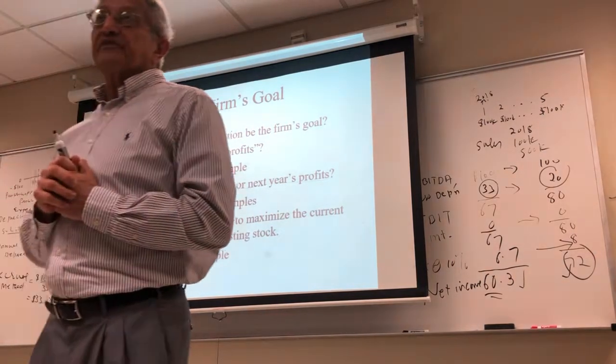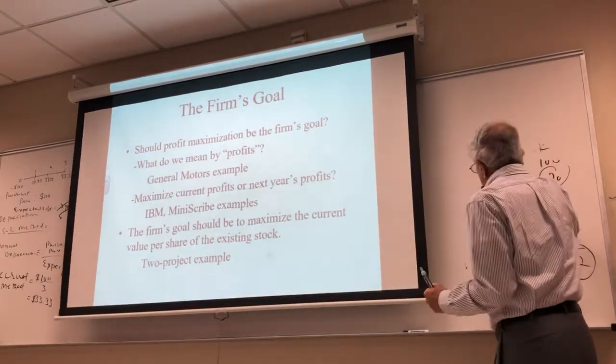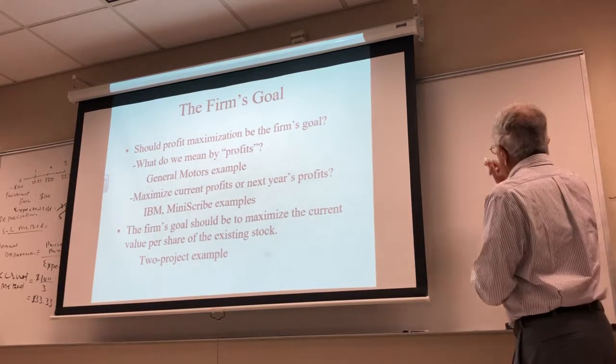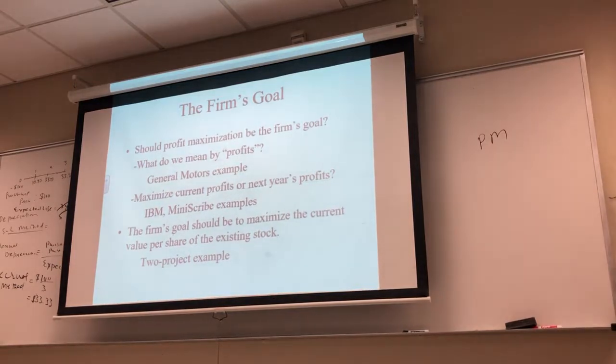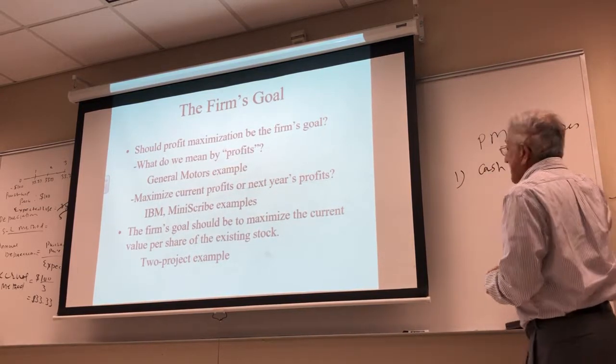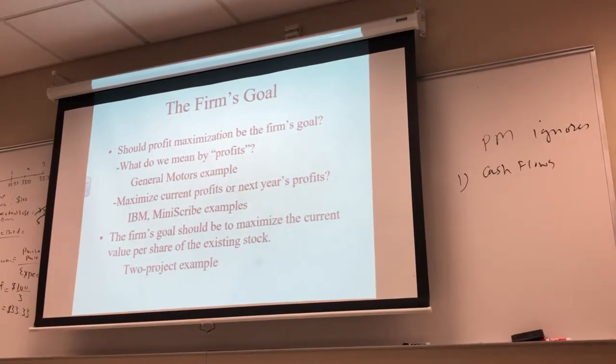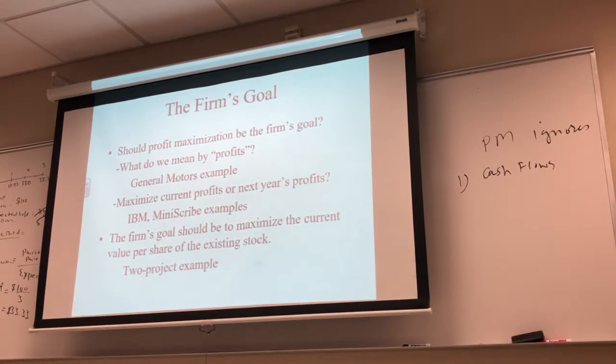So we have problems with profit maximization. So what are the problems? Let me list three problems we have with profit maximization. Profit maximization, I'm using the acronym PM, profit maximization, ignores, number one, cash flows. Cash flows. What are not profits? These are not cash profits, right? So ignores cash flows. Okay? Like GM manipulated the depreciation number. IBM brought in revenue from future time periods. Okay? Was it equal to the cash flow, actual cash flow? No, it was not. So profit maximization ignores cash flows. We in finance emphasize cash flows.